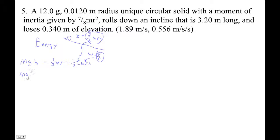And now our next step is MGH is 1 half MV squared plus 1 half 7 eighths times MR squared. And then we substitute that in and it's squared. So it's V squared over R squared. And the R's cancel. The M's obligingly cancel.